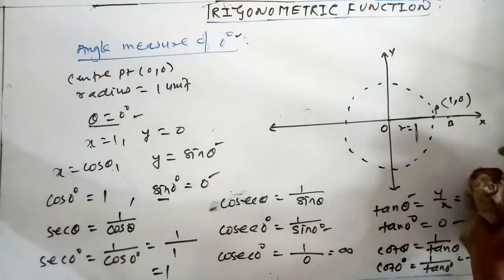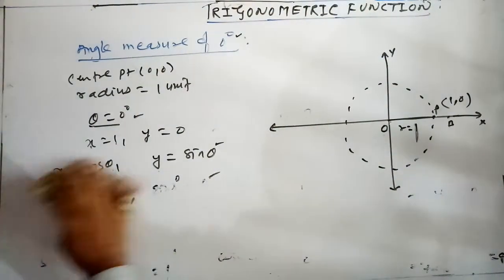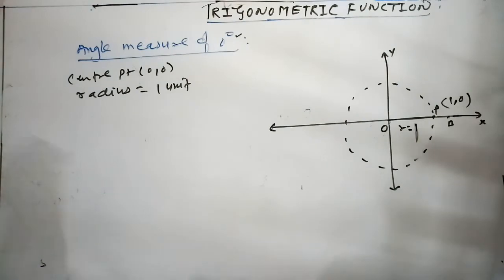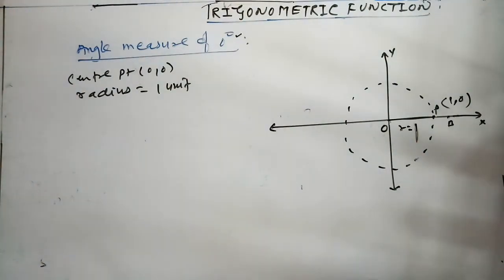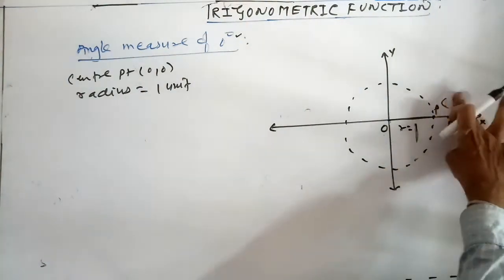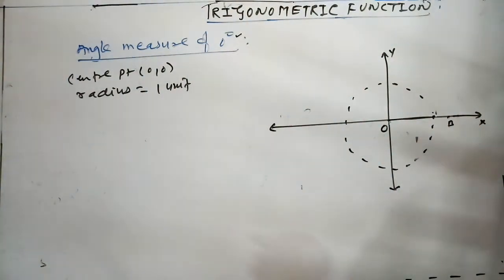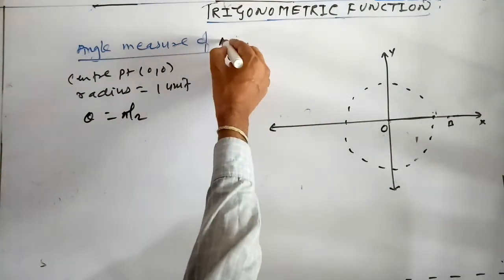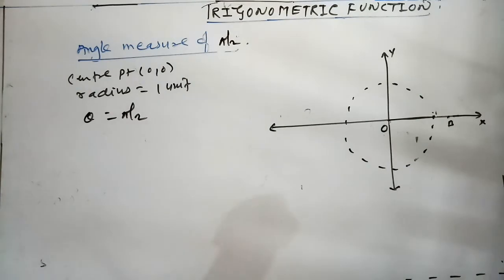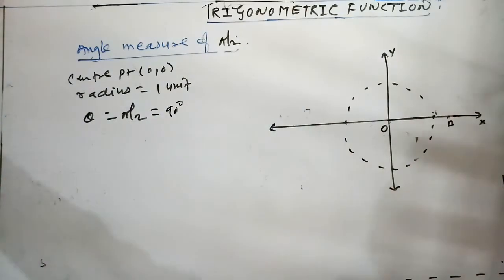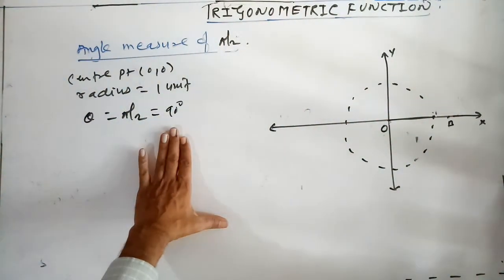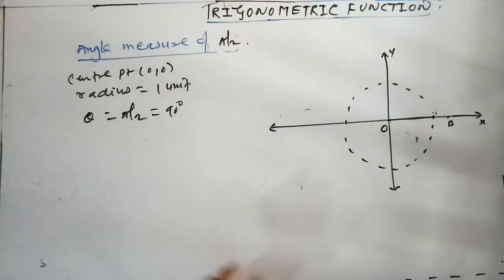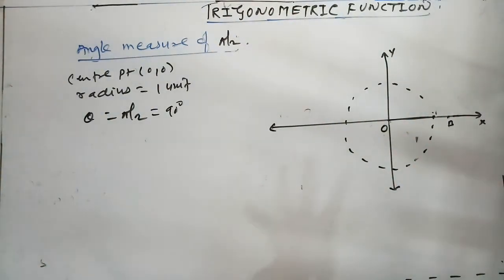उसके बाद देखते हैं π/2 के लिए। Same process है। theta = π/2, यानी 90 degree। Standard unit circle में 90 degree का angle construct करना है। Vertex on the plane surface लेते हैं और same steps follow करते हैं।